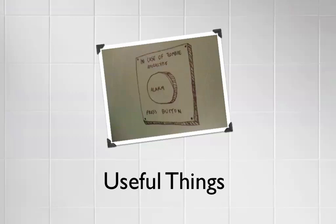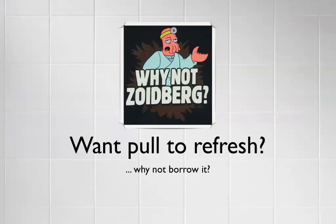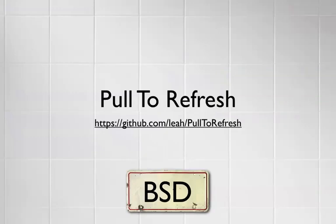This is the bit where we jump through a few useful bits and pieces that might make your life as an iPhone programmer a bit easier. Free code tends to make better apps and usually the best iPhone apps incorporate some free code somewhere or give back in the form of free code. Everyone should be familiar with pull to refresh — it's a pretty popular gesture these days. Why not use someone else's implementation? There are literally hundreds of implementations. This one uses a BSD license so you're free to do basically whatever you like.